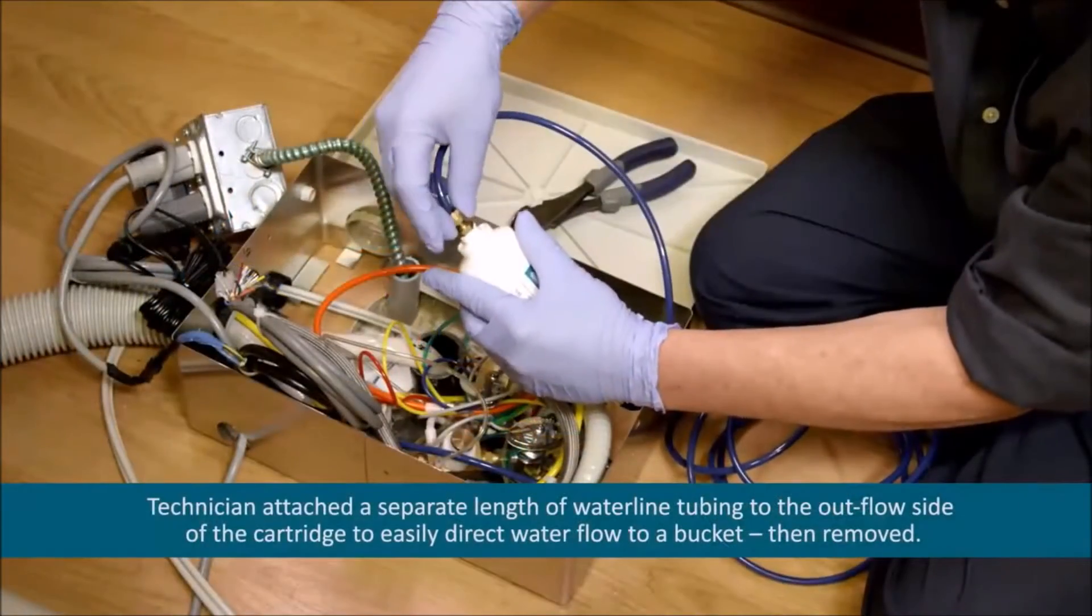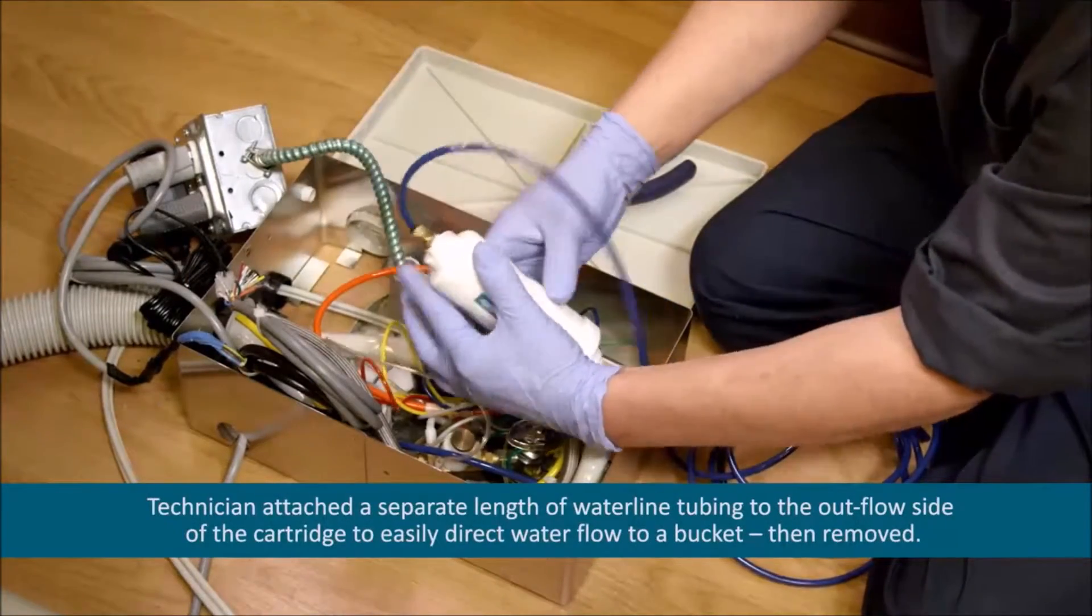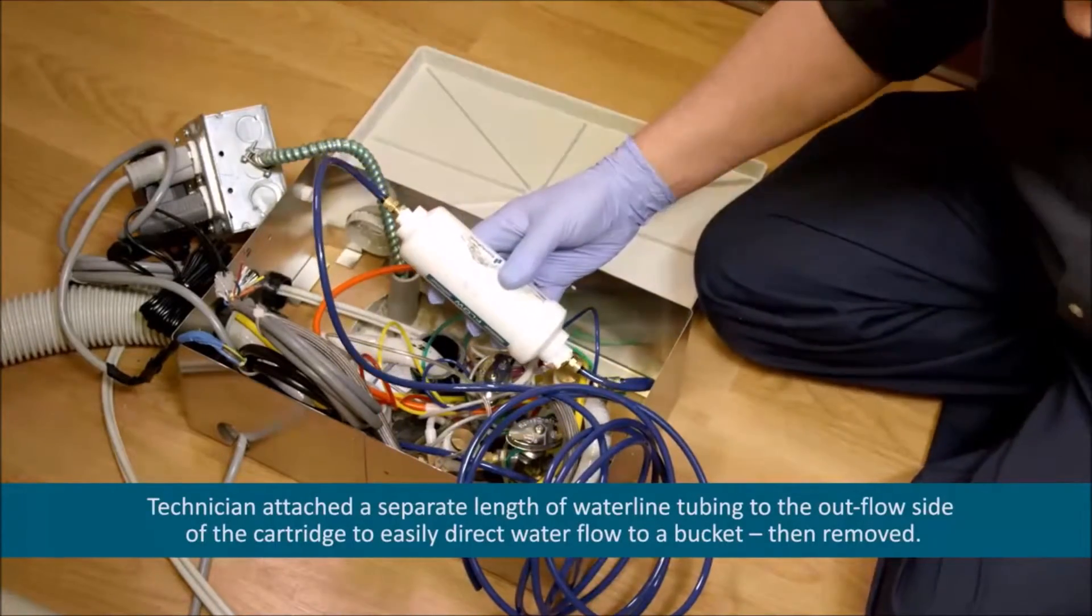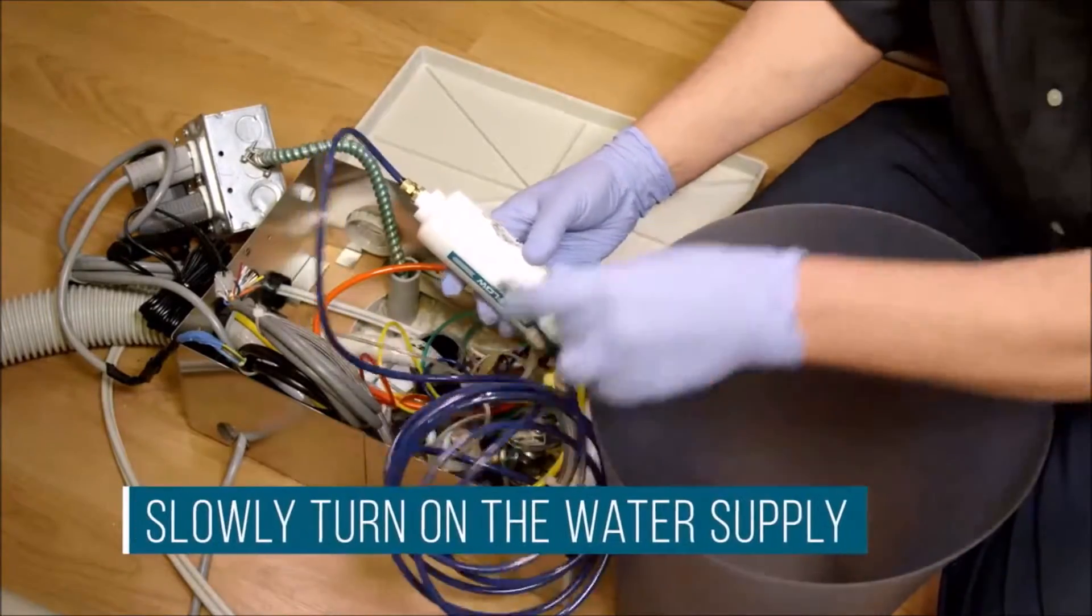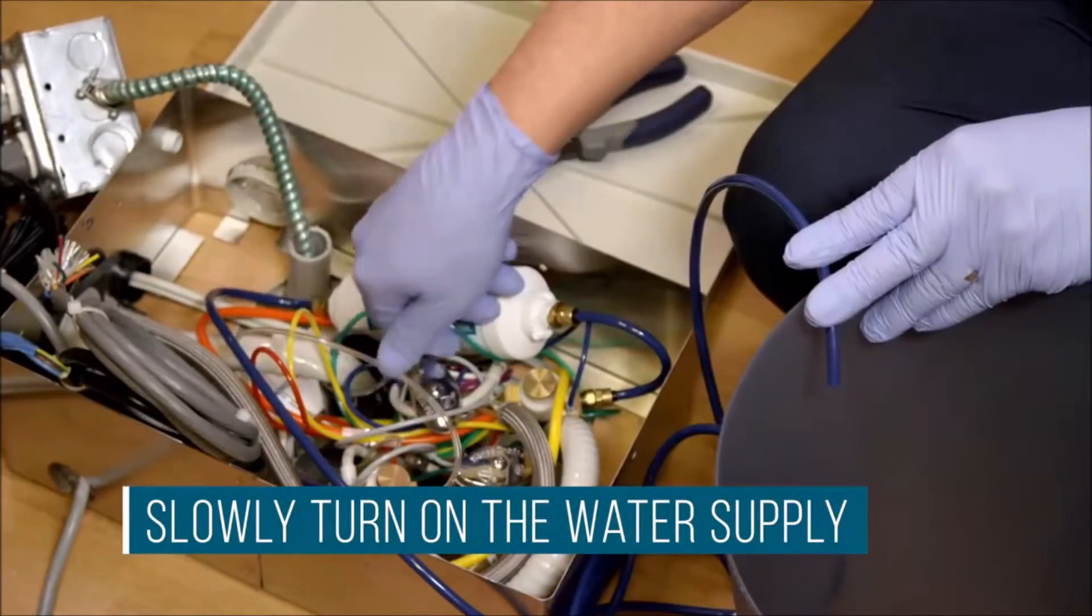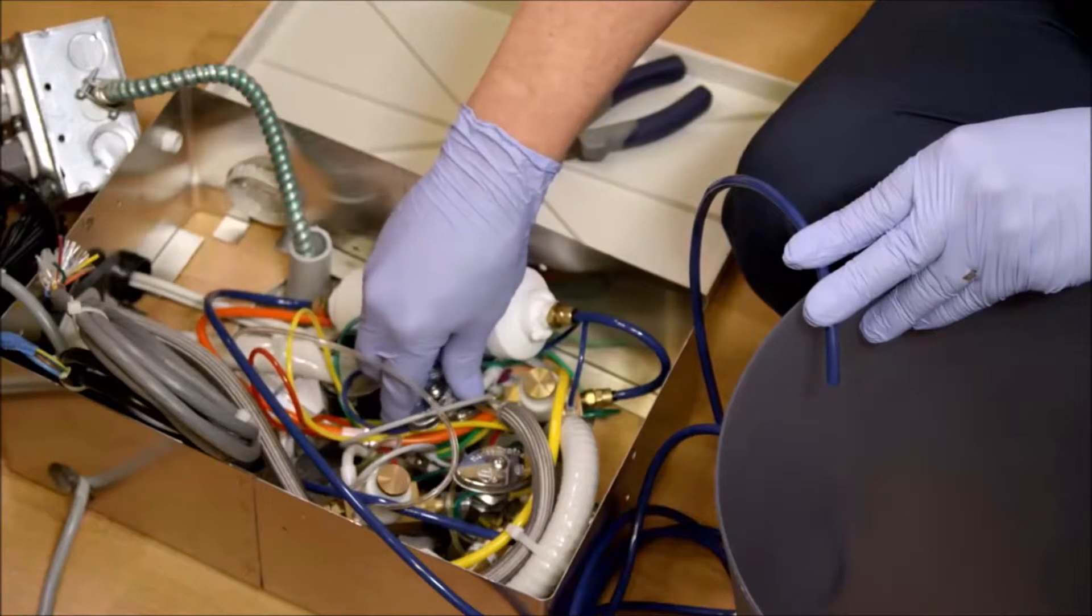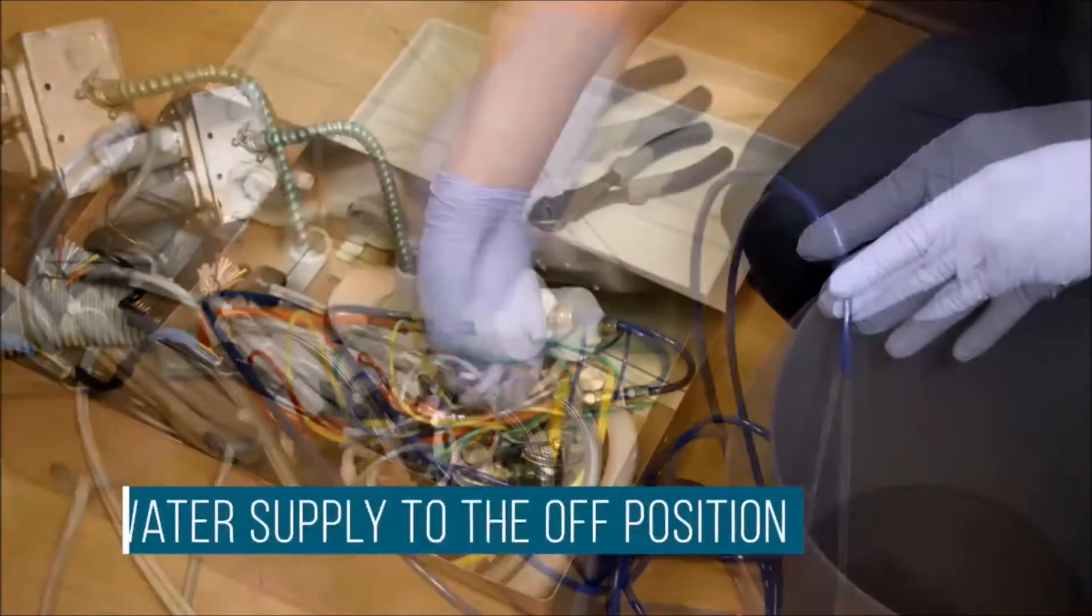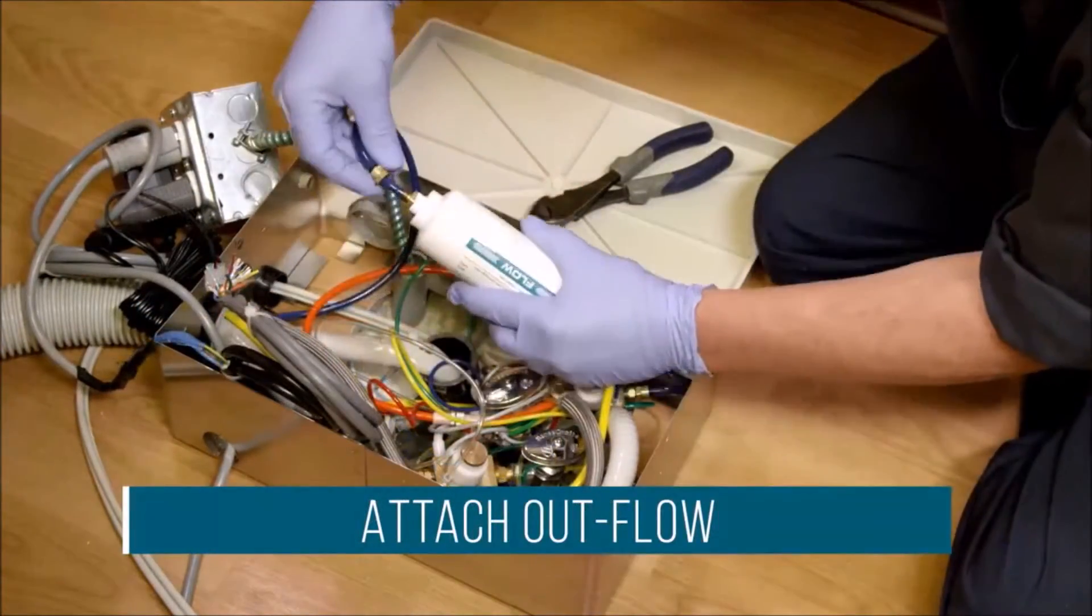Prior to installing the outflow side, you'll need to run water through the cartridge to purge air and remove any extra carbon particles. This will prevent the particles from entering the dental unit. To do this, slowly turn on the water supply until water is flowing through the cartridge. You should see the particles clearly and they will dissipate quickly. Return the water supply to the off position and attach the outflow side of the cartridge.